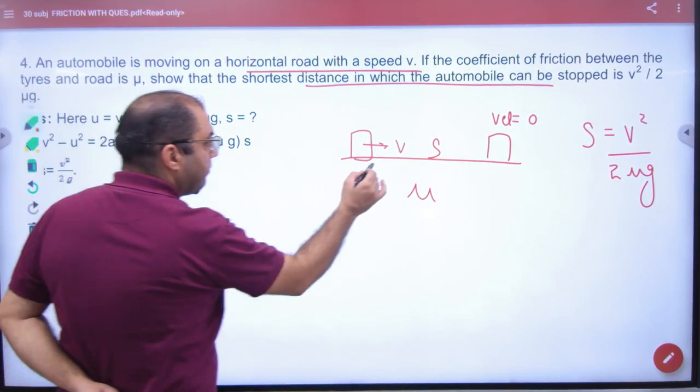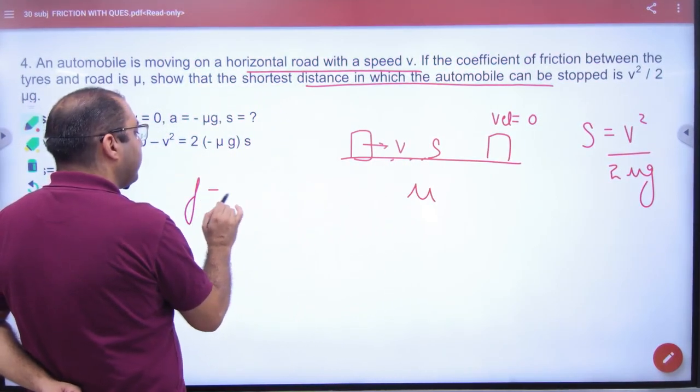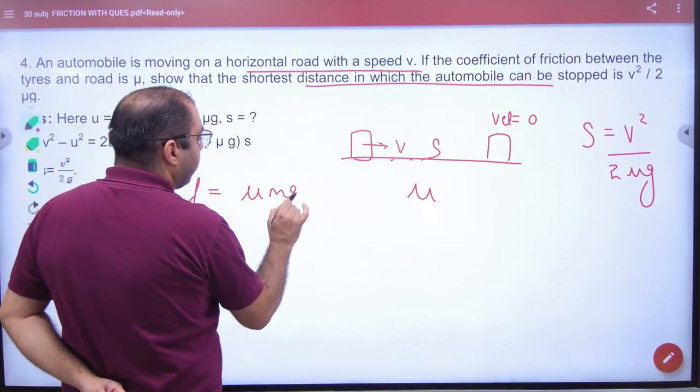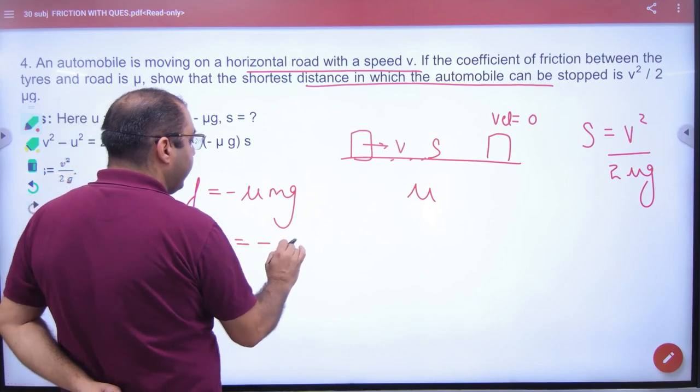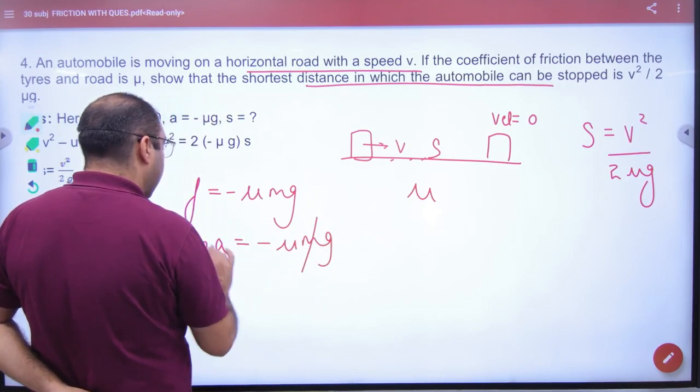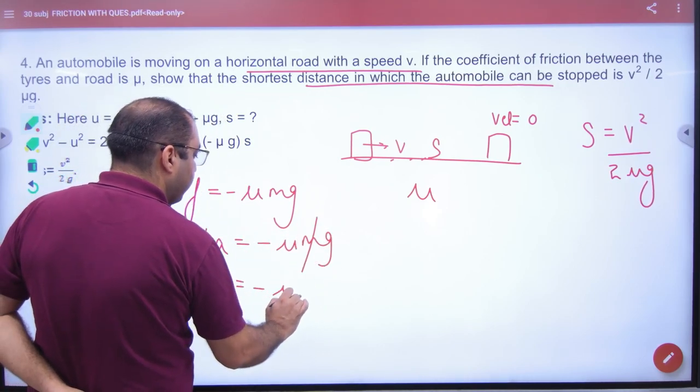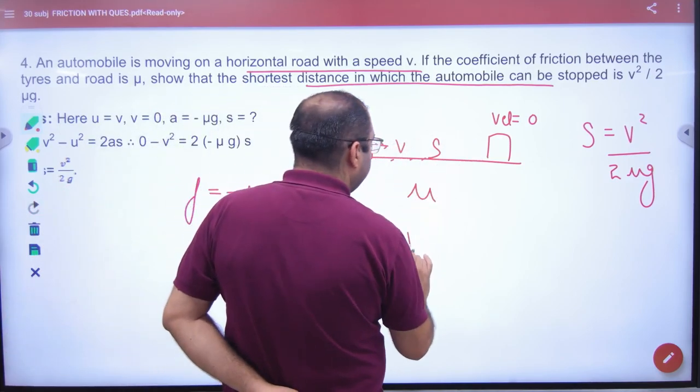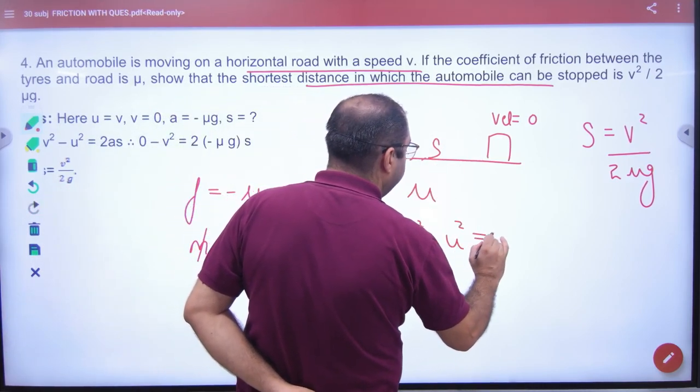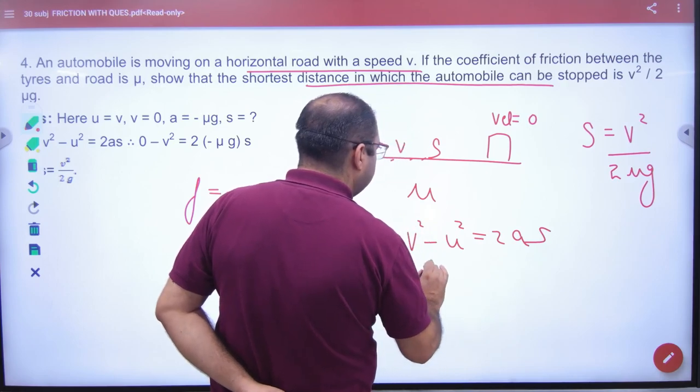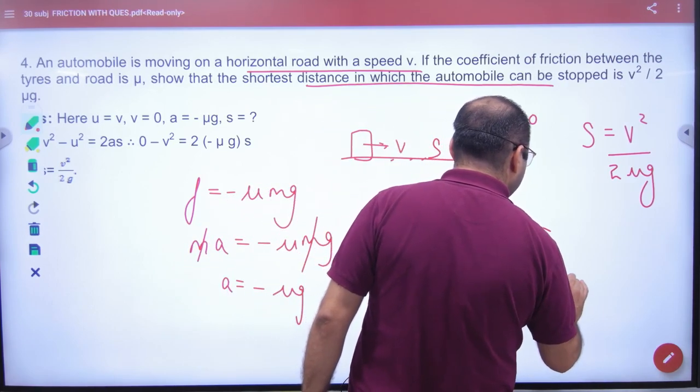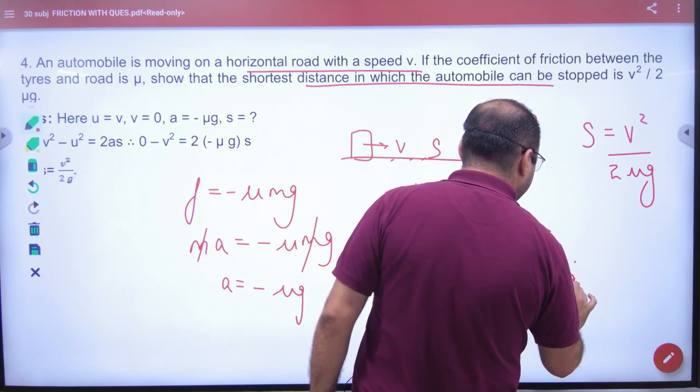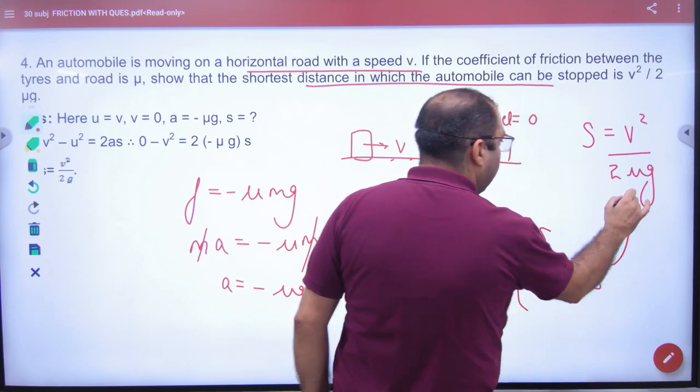Now, friction is present and the force of friction produces retardation. So the retardation value will be μg. Apply v² - u² = 2as. In this, 0² - v² = 2 × (-μg) × s. Solve for s and the answer will be proved.